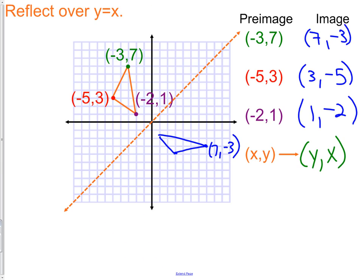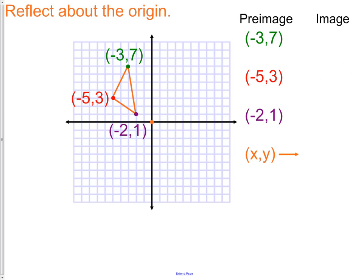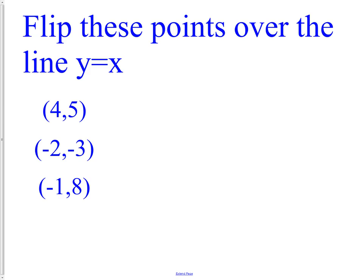Flipping over the x-axis, we change the y-coordinate. And flipping over the equation y equals x, we exchange our coordinates, the x and the y. We have one left. So go ahead and do this reflection using the formula of switching your coordinates.